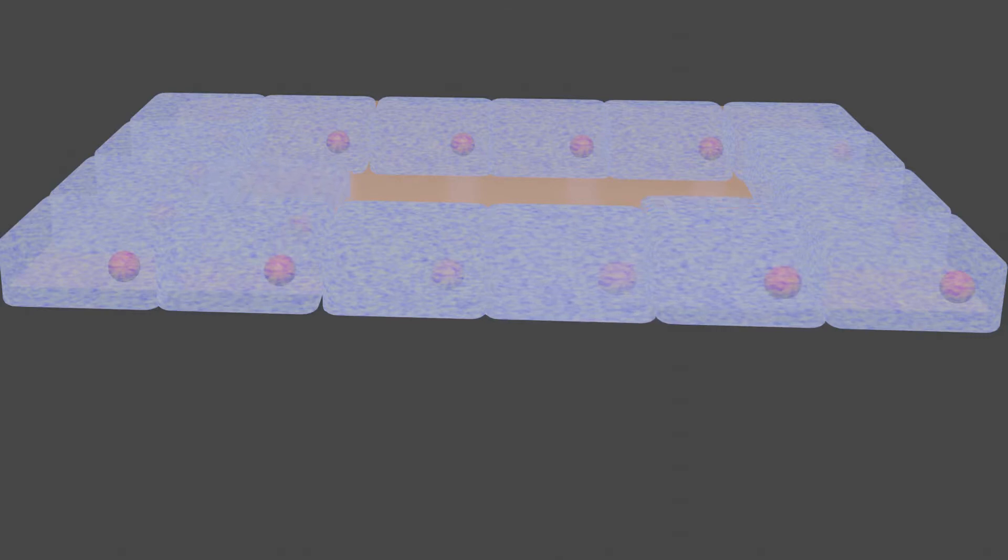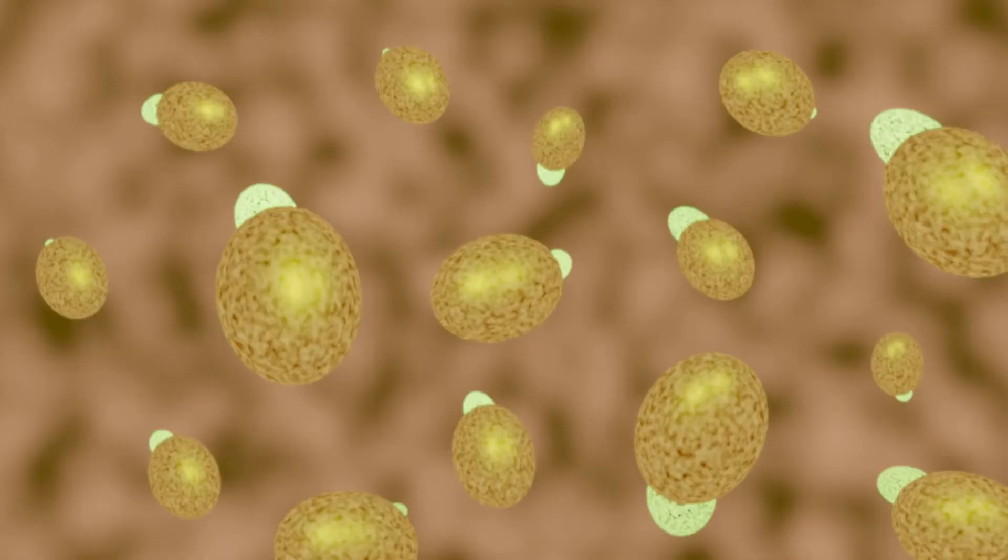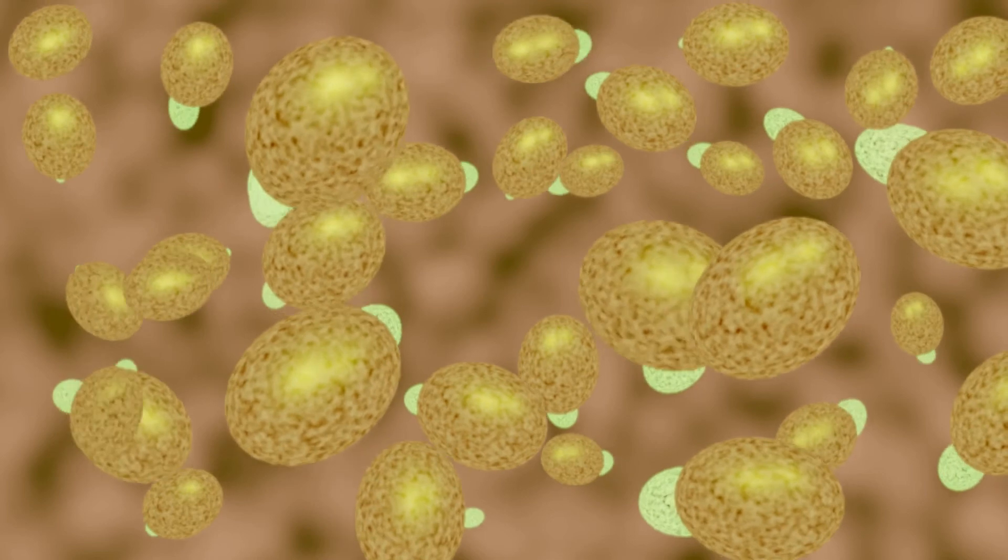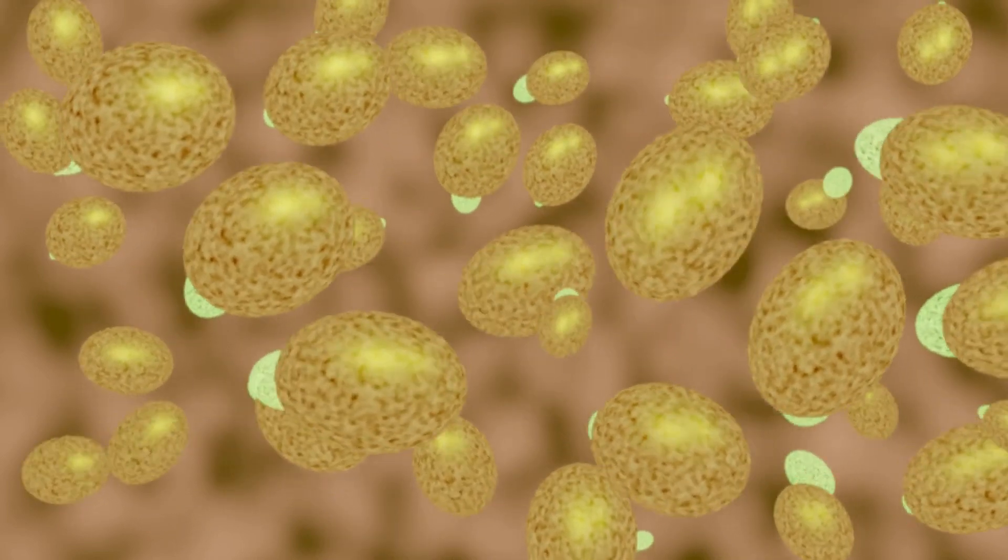Mitosis also helps in repairing the damaged tissue or replacing the worn-out cells. In single-celled eukaryotes like yeast, mitotic divisions are actually a form of reproduction, adding new individuals to the population.